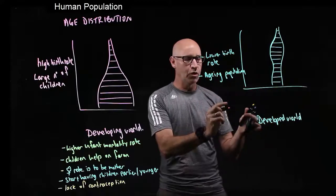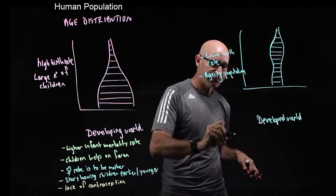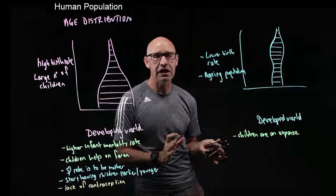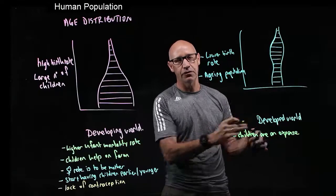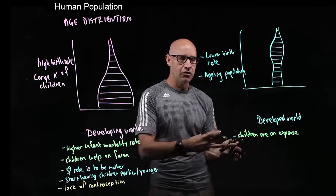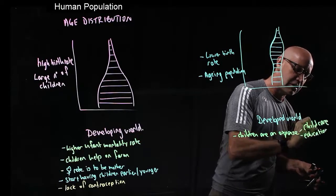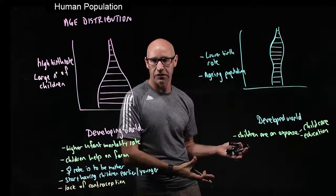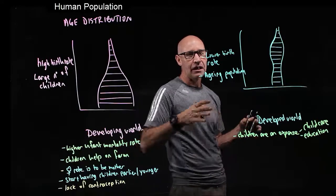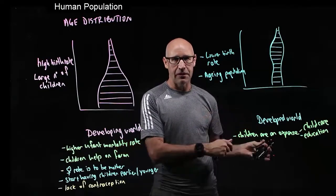Now let's talk about the developed world. What are the factors there? First of all, it's expensive to have children. So instead of seeing children as a resource that can help out on the farm, it's actually expensive for childcare, education, and all the things that children want to do outside of school. So children being expensive is one of the reasons why families in the developed world have fewer children.